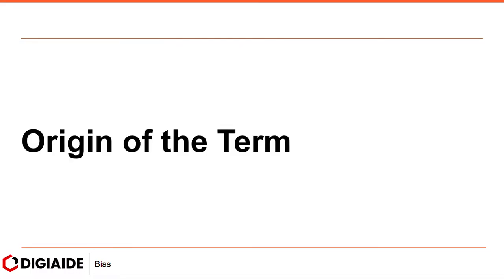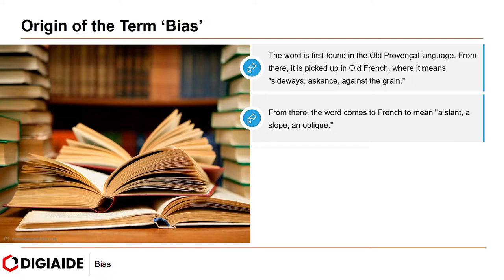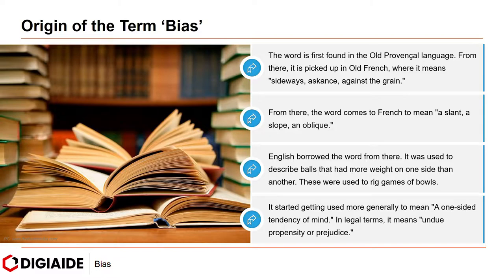Moving on to the origin of the term bias. The word is first found in the Old Provençal language. From there, it is picked up in Old French where it means sideways, askance, against the grain. From there, the word came to mean a slant, a slope, and oblique. English borrowed the word from there. It was used to describe balls that had more weight on one side than the other — they were used to rig games of bowls. It started getting used more generally to mean a one-sided tendency of mind. In legal terms, it means undue propensity or prejudice.